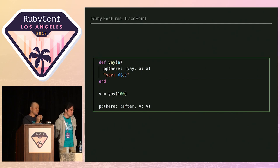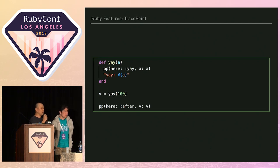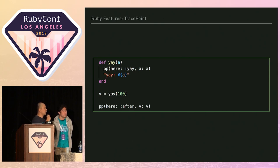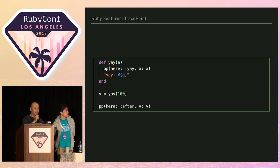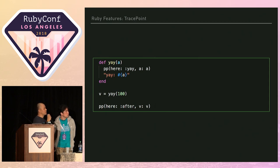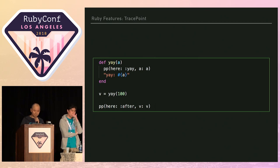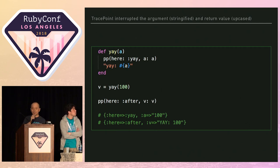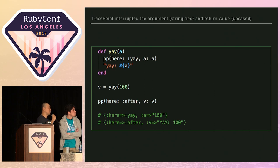Look at this code. This is a very simple method definition — defining method yay with argument a, dumping the content of local variable a, then returning the string 'yay'. Then we call the yay method with integer 100 and dump the result. Surprisingly, the value of local variable a is the string '100', and the return value is upcased 'YAY'. What happened? In fact, above this code I enabled a TracePoint to set a local variable with the string file value, and to call upcase on the returned value. So this is what TracePoint can do.